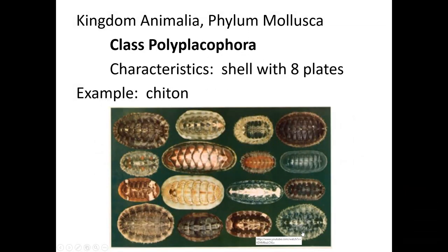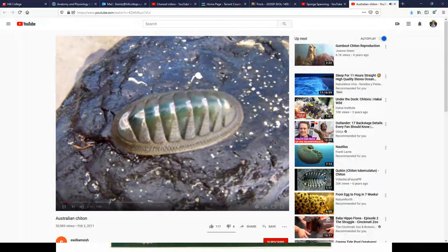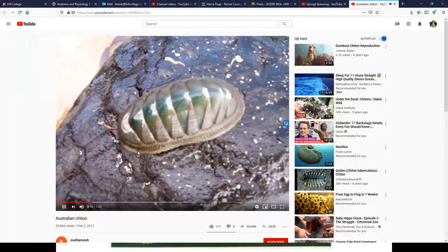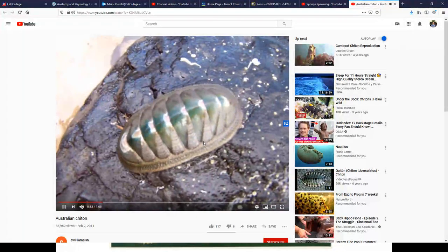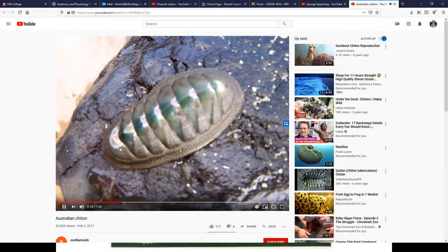Polyplacophorans — chitons — won't be found around our area, but if you go to rocky intertidal beaches you might find them. They're a cross between a roly-poly and a slug: roly-poly because they have multiple plates on their shell and can roll up, and slug-like because they have that muscular foot. They create amazing suction on rocks and it's nearly impossible even for a full-size adult to pull them off once attached — so if your kid is annoying you at a rocky beach, tell them they can keep one if they can pull it off the rock.